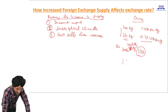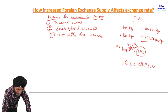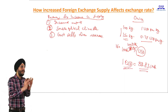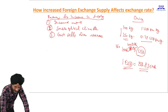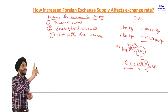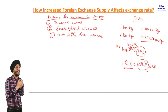Let us understand what we have said. Suppose the value of 1 US dollar at present is 82.83 Indian rupees. Exchange rate means we will have to pay 82.83 Indian rupees to get 1 unit of US dollar. This is the exchange rate.